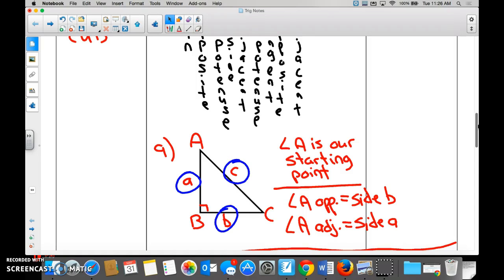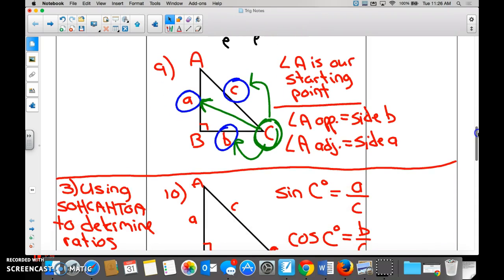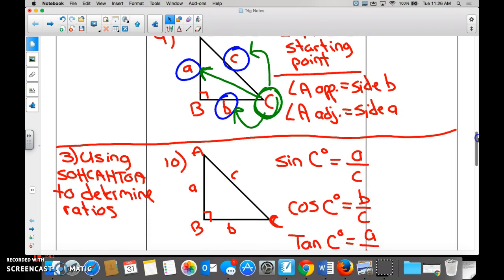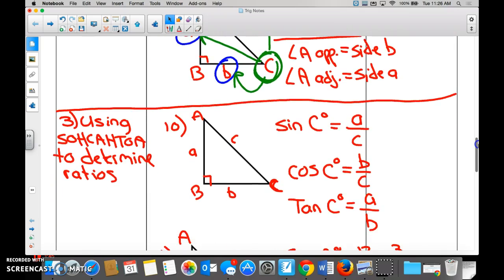Just for kicks and giggles, what is opposite angle C? Side A. What is the hypotenuse for angle C? Side C, because it is for everything. And what is the adjacent for angle C? Side B. Okay? So just practicing on what our sides are when they correspond to adjacent, hypotenuse, and opposite.